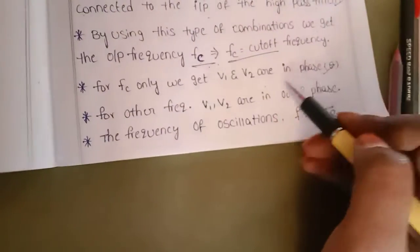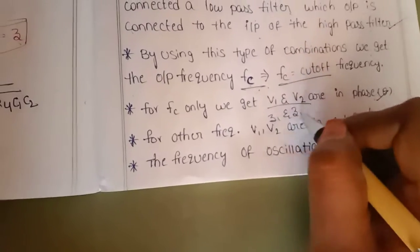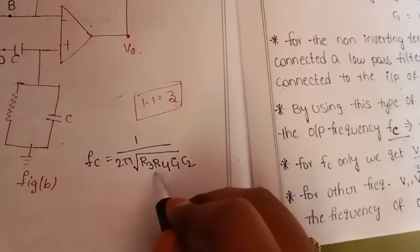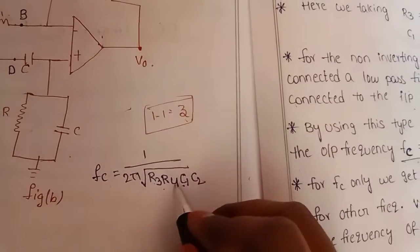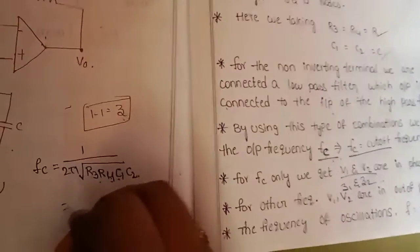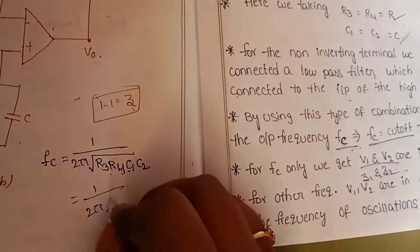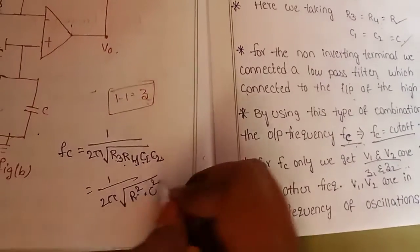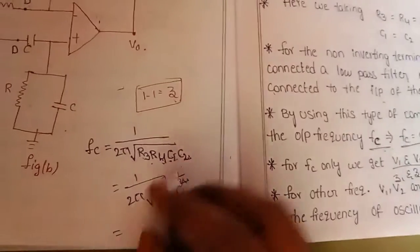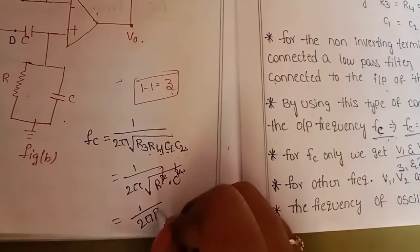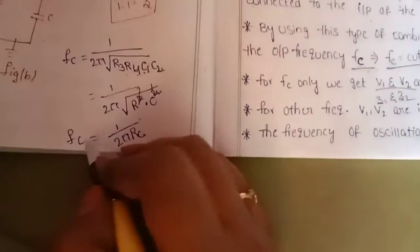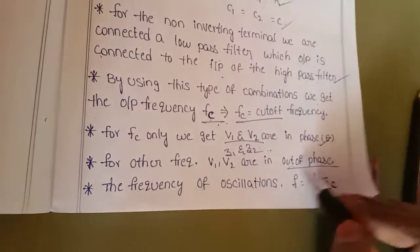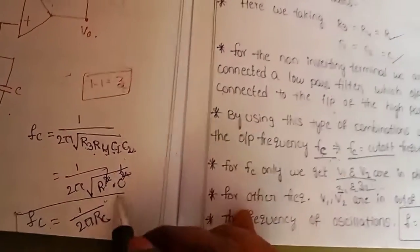We calculate using impedances Z1 and Z2. With R3 and R4 equal to R, and C1 and C2 equal to C, the formula simplifies. The frequency of oscillations is F = 1 / (2πRC), which is the correct formula for the Wien Bridge sine wave generator.